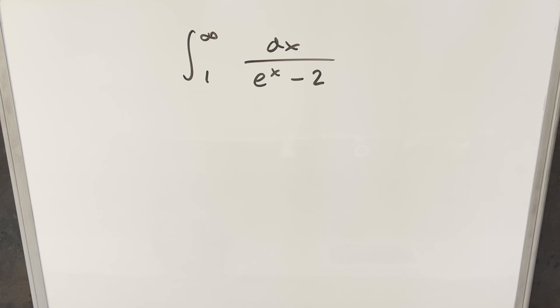We retain our integral on the board. We've got the integral from 1 to infinity of 1 over e to the x minus 2, dx. This one should go pretty quick.